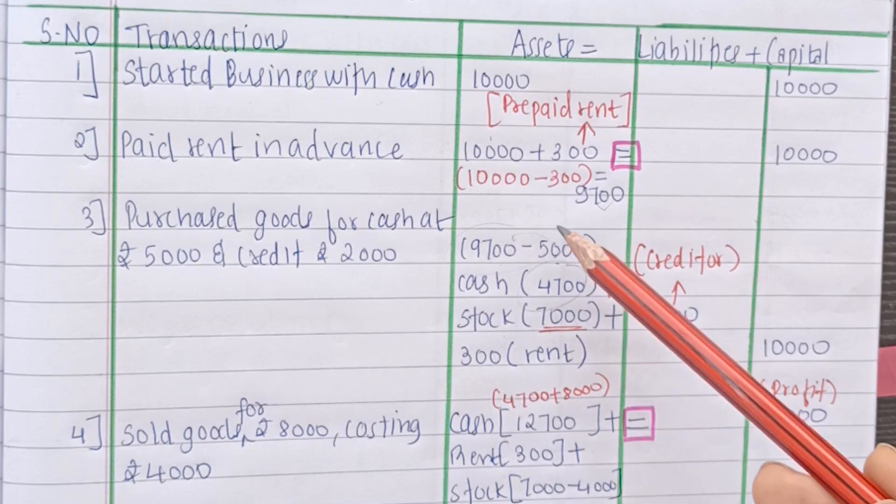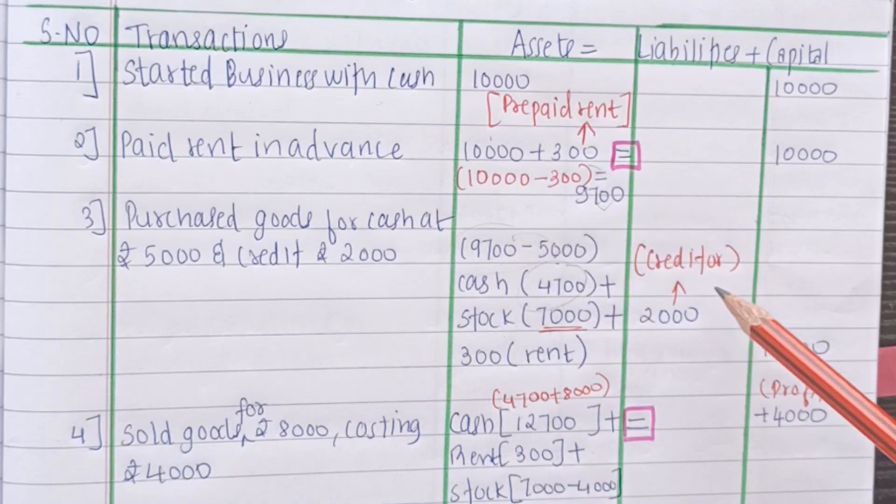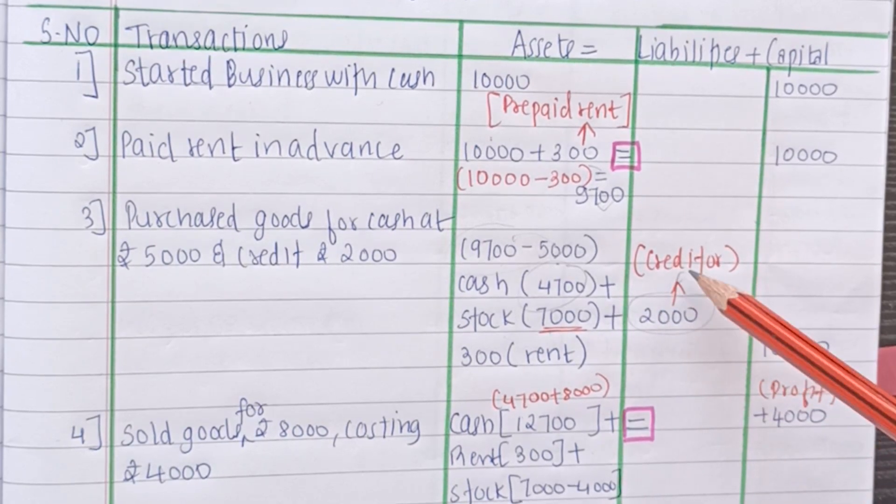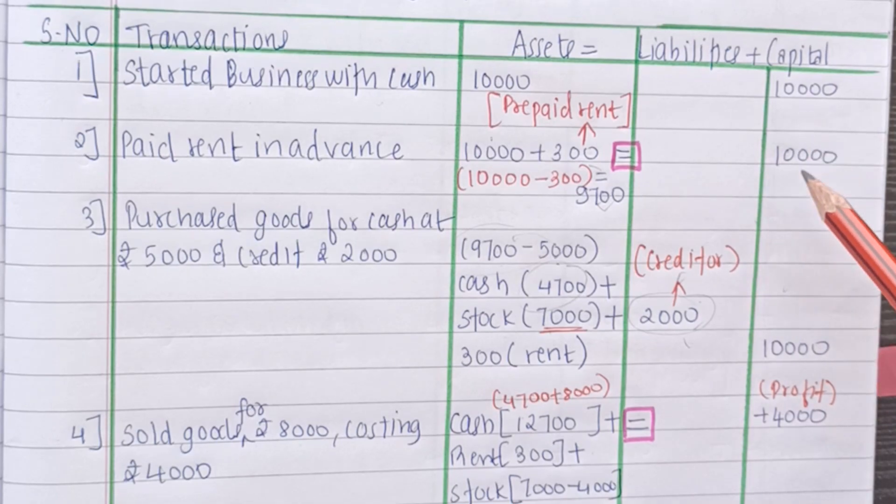So as we can see that here we had 9700 as cash. So we minus 5000 from it. Why? Because we paid for the goods. So this cash then becomes 4700. Then stock becomes 7000. And plus this rent. So here the liability side we will have to write 2000 as creditor. Because we have purchased on credit. And the capital side will remain unchanged. It will remain the same. That is 10,000.